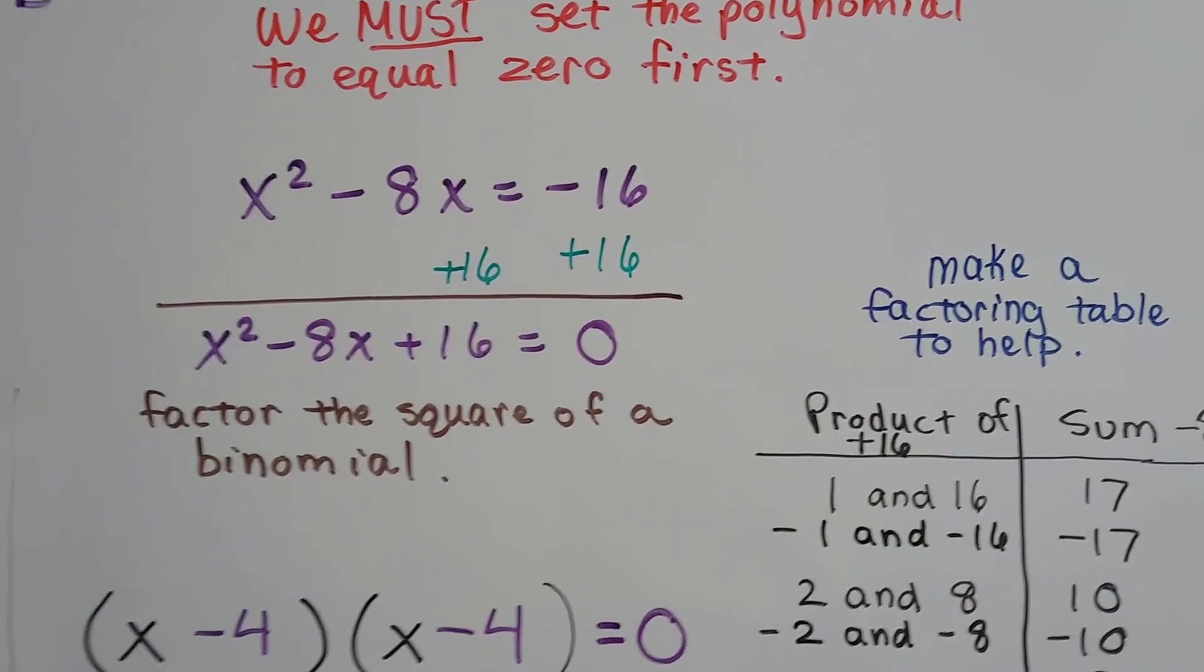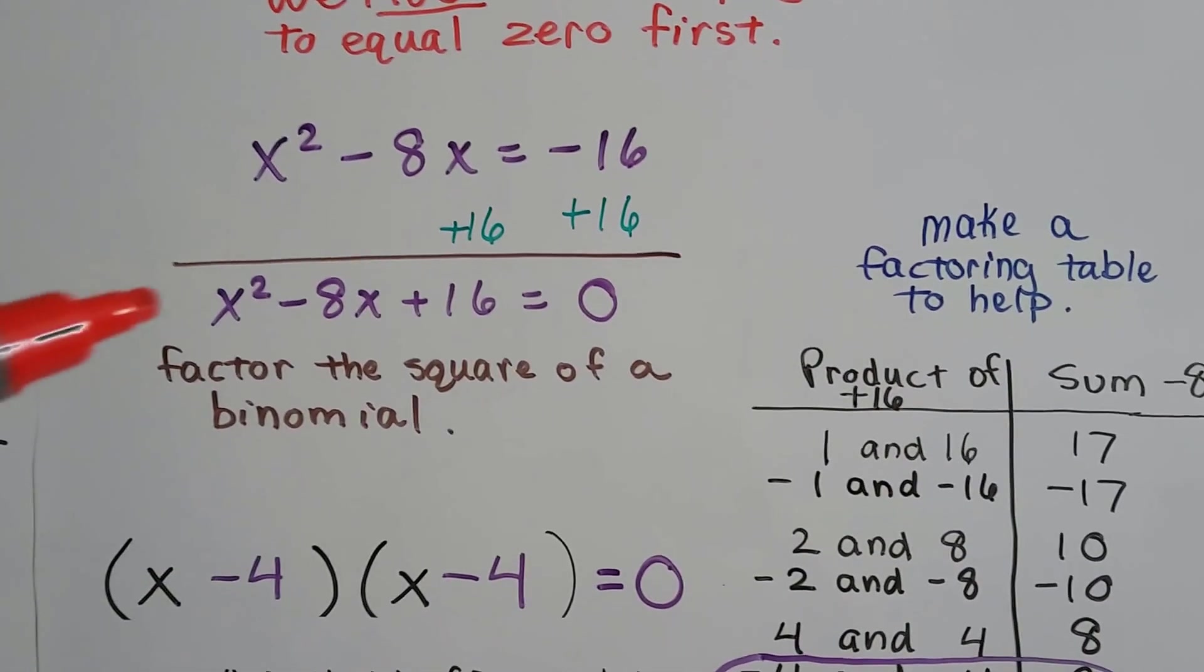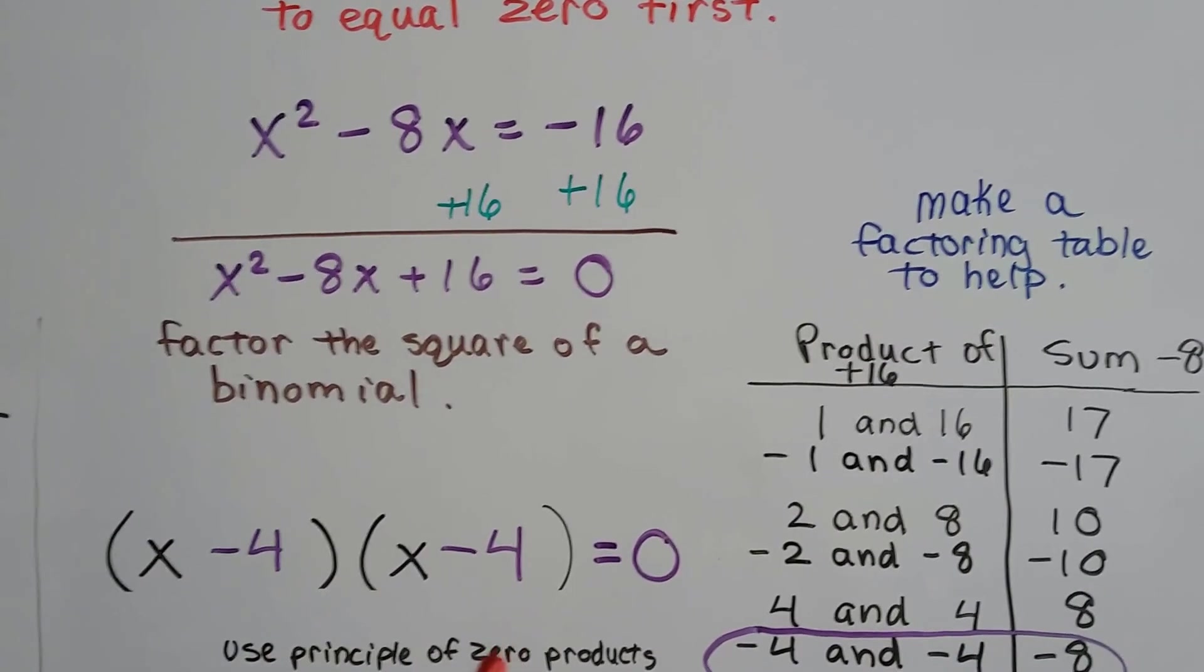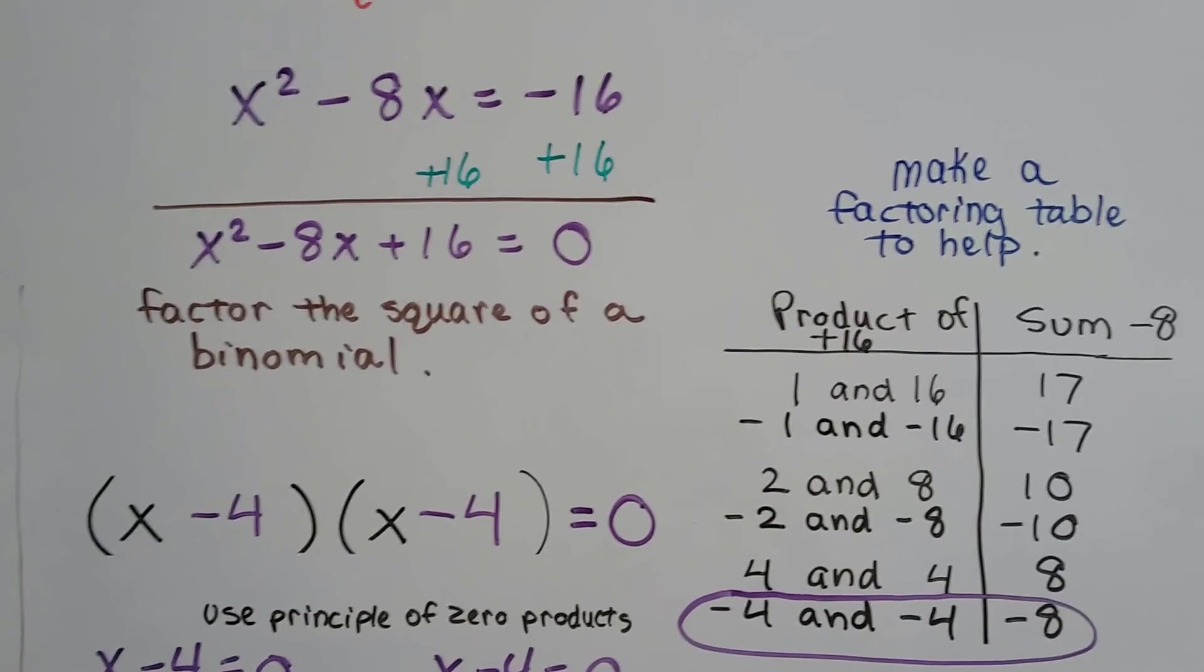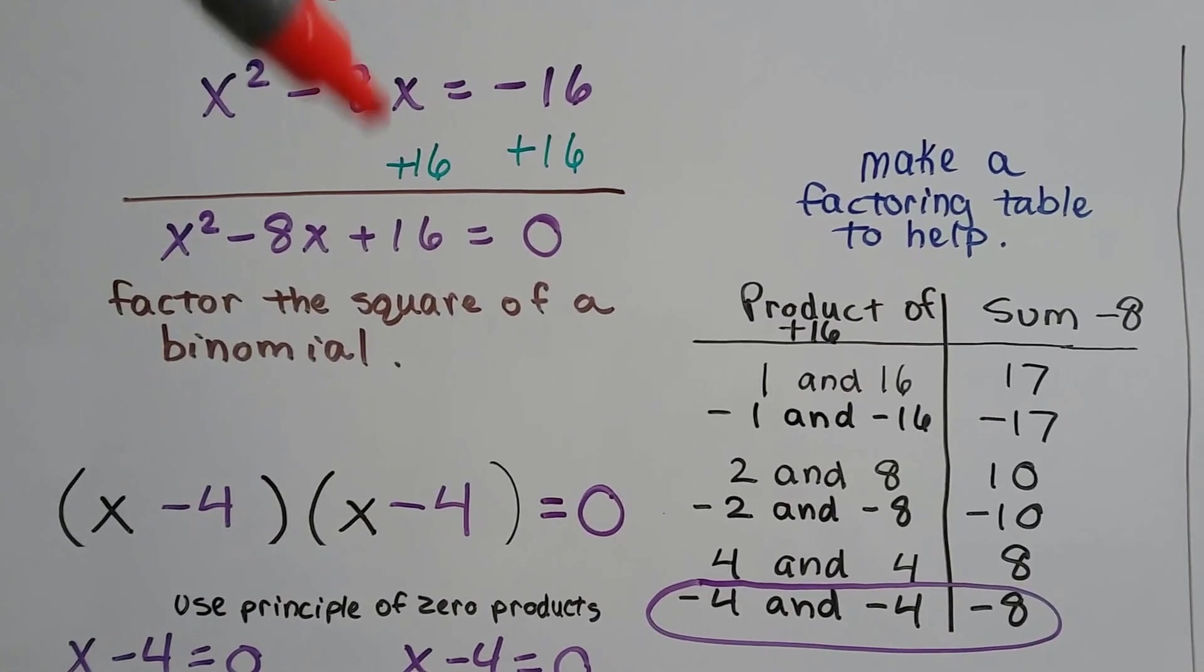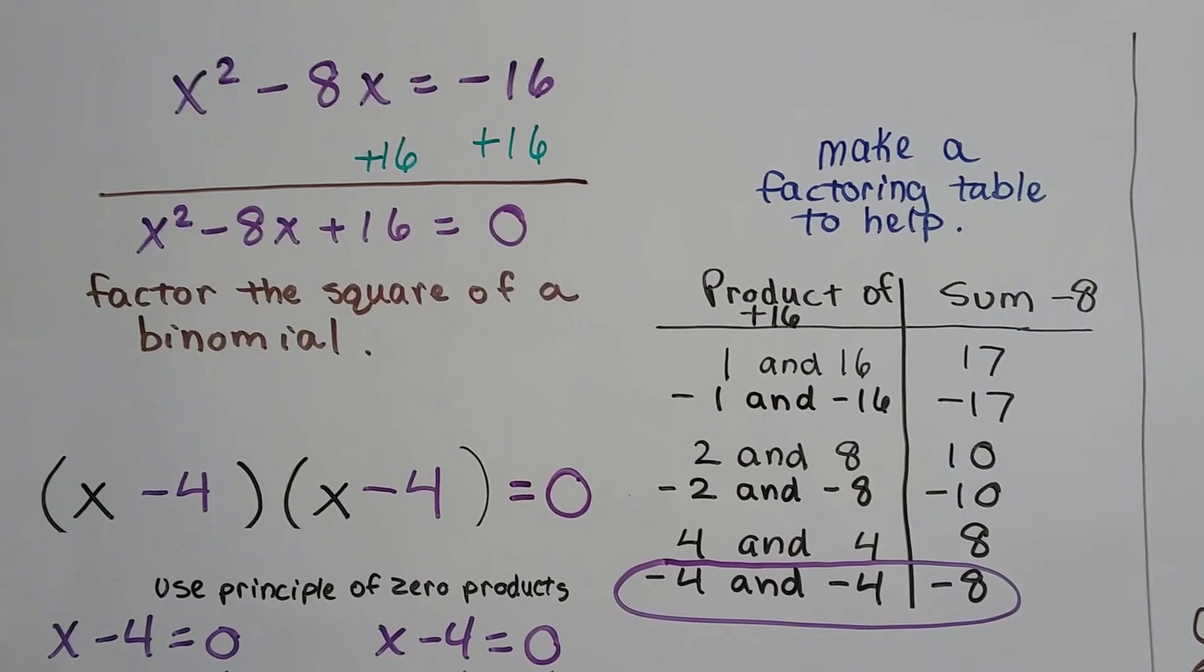Now we factor the square of a binomial. So when we see this x squared, the first thing we do is make two sets of parentheses and put an x in the beginning of each one. Now we need to find two numbers that the product is a positive 16 and their sum is a negative 8.